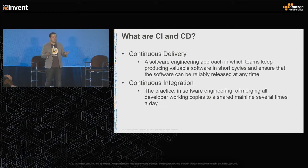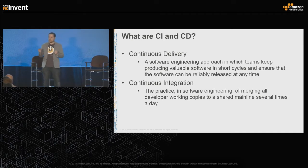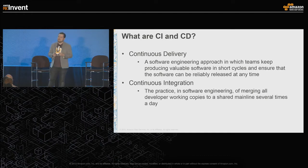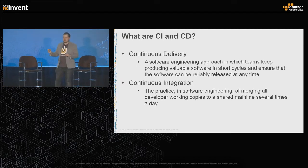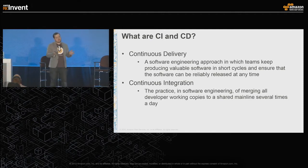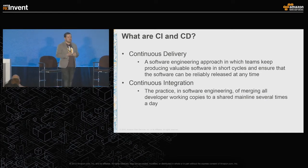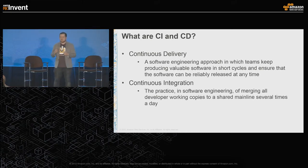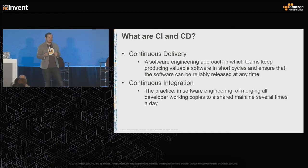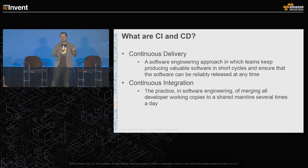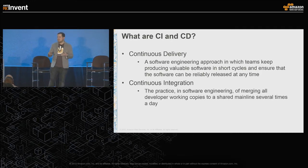So what is continuous integration, and what is continuous delivery? Continuous integration is the practice of merging all developer working copies to a shared mainline branch every time you commit to your repo. A CI server runs tests, and assuming everything passes, integrates the code into the mainline branch. Continuous delivery is an approach which allows teams to keep producing valuable software in short cycles and ensure the software can be reliably released at any given time — automatically deploying every time you commit, whether to staging or production.